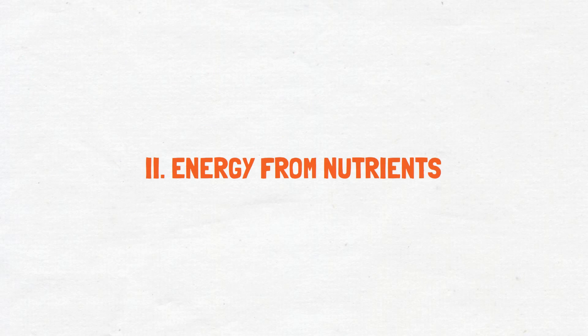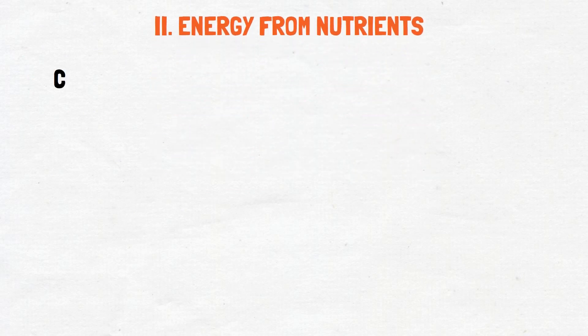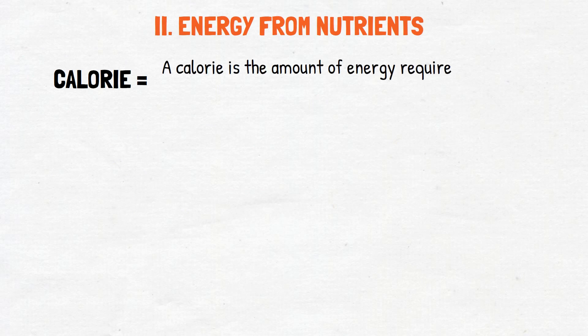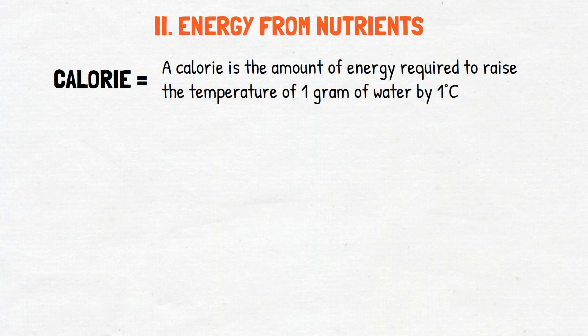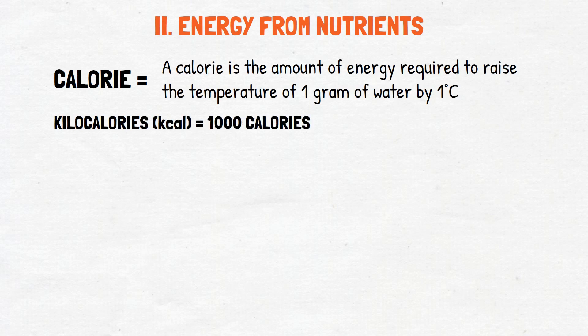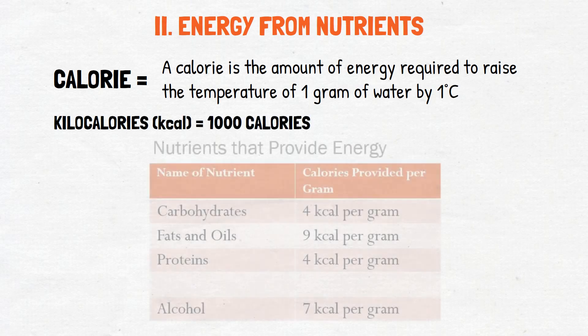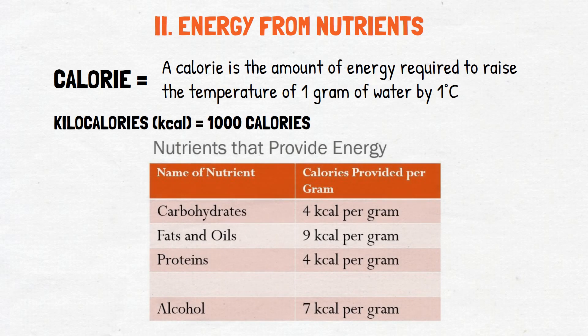Energy from nutrients. In regards to food, the unit used to measure its energy content is known as the calorie. A calorie is the amount of energy required to raise the temperature of one gram of water by one degree Celsius. However, the calories used in reference to food are known as kilocalories, which are 1,000 calories. Here are some examples of nutrients and the calories that they provide per gram.